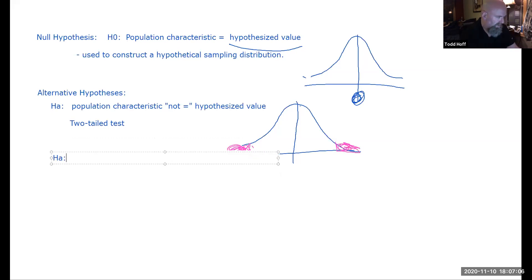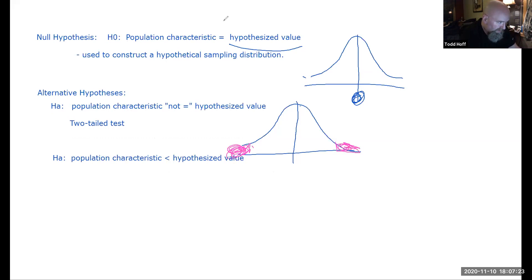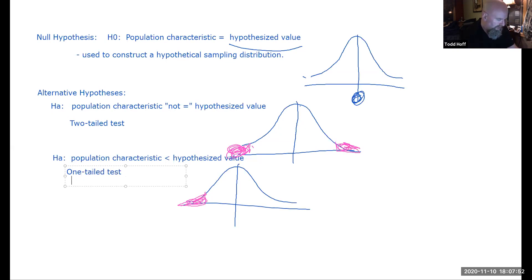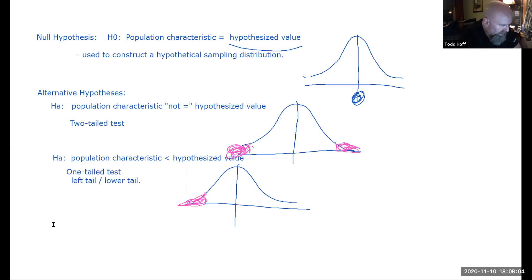The second form is that the population characteristic is less than the hypothesized value. We'd reject if we get sample data that's too far onto the lower tail. This is a one-tailed test — specifically a left tail or lower tail test. If our sample gives results too far down on that tail, we reject the null hypothesis.